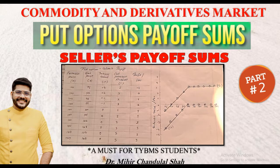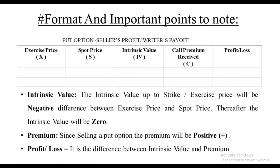Before solving the sum, we need to go through some rules with the help of which we'll be able to quickly solve the sum based on put option where we have seller's payoff. The question will contain the exercise price and spot price, and we have to find the intrinsic value, the premium, and the profit and loss. The intrinsic value before the point where exercise and spot price are equal will be the negative difference between them, and thereafter it turns out to be zero. Since we are selling a put option, the premium will be positive because we receive the money, and profit and loss is the difference between the intrinsic value and the premium.